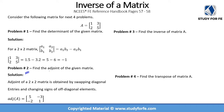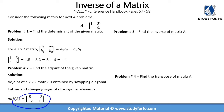Problem number two asks us to find the adjoint of the given matrix. For a two by two matrix, we swap the entries on the diagonal — so one and five become five and one. For the off-diagonal items, we change the signs: two and three become minus two and minus three. This is the adjoint of a two by two matrix — simply swap the diagonal entries and change the signs of the off-diagonal items.